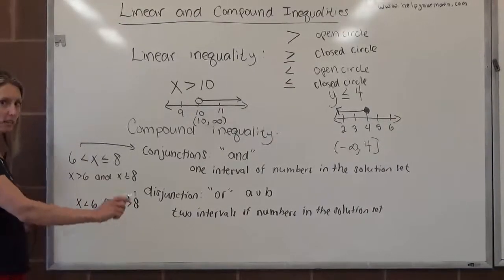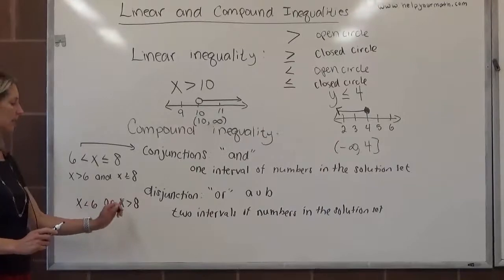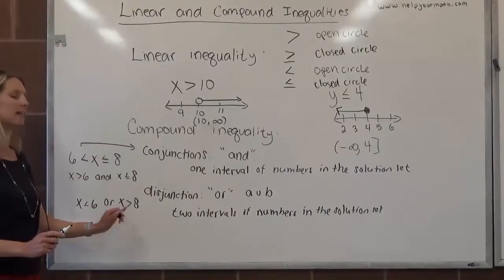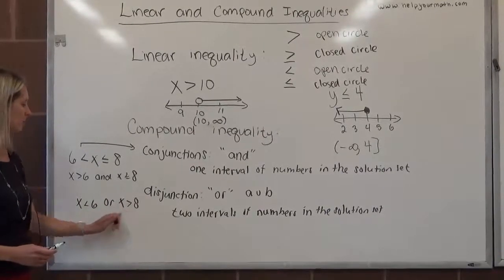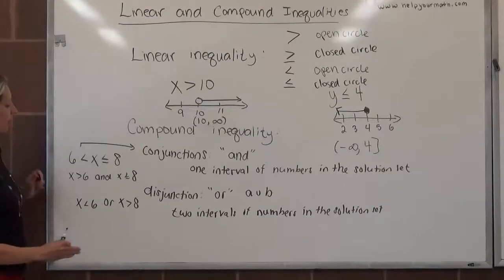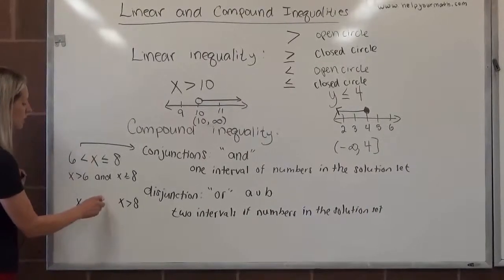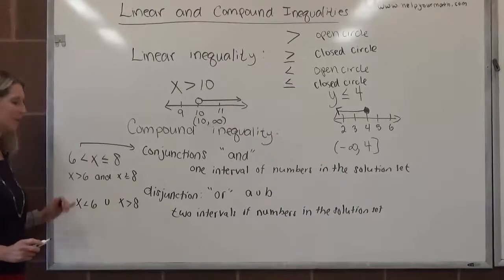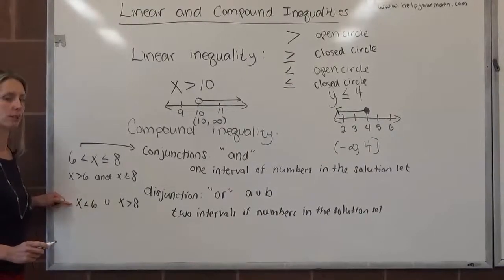A disjunction might look like x is less than 6 or x is greater than 8. There's two distinct sets of numbers: the numbers that are less than 6 and the other set is the numbers greater than 8. These would be a disjunction. We use the word or. I think my colleague would be mad at me because I'm supposed to use the union symbol, so we're going to switch that to a union symbol. This is how we would write an answer for a disjunction.